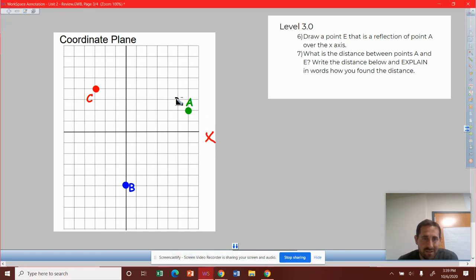Again, we've already labeled this as the x-axis and this vertical one as the y-axis. So we're saying, can you take point A and reflect it over this x-axis so it's going to move from where it is down to the bottom?